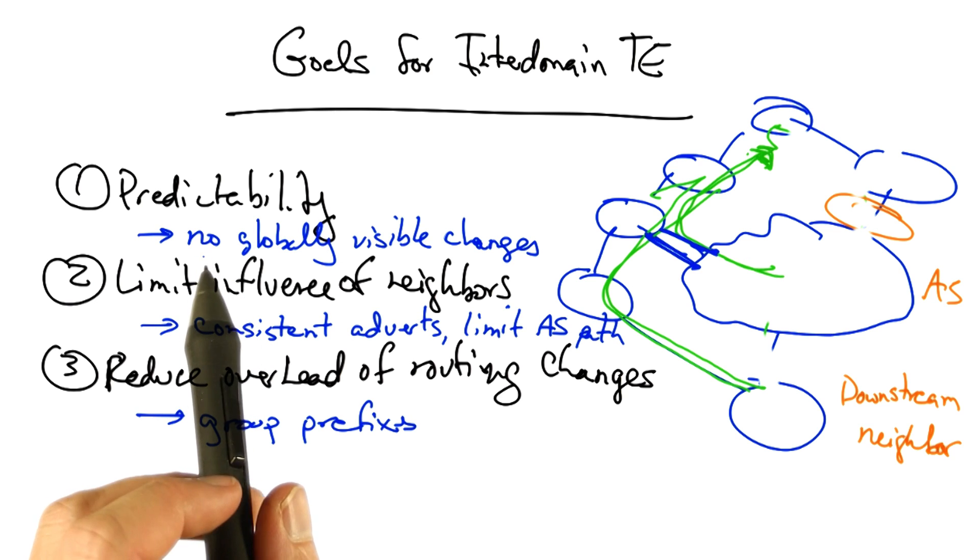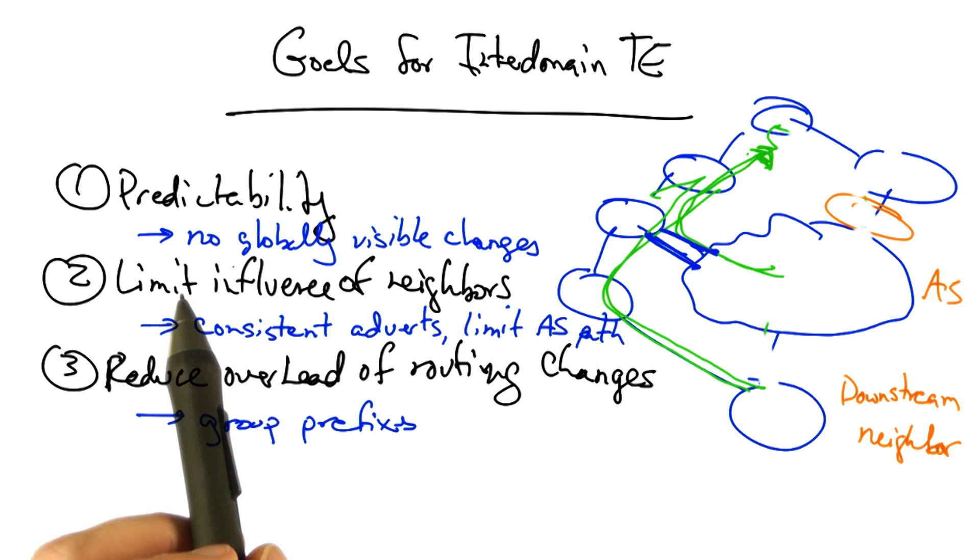In summary, to achieve predictability, we effect changes that are not globally visible. To limit the influence of neighbors, we enforce consistent advertisements and limit the influence of AS path length. And to reduce the overhead of routing changes, we group prefixes according to those that have common AS paths and move traffic in terms of groups of prefixes.